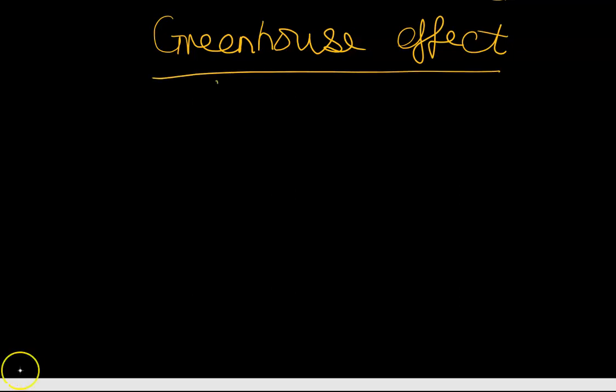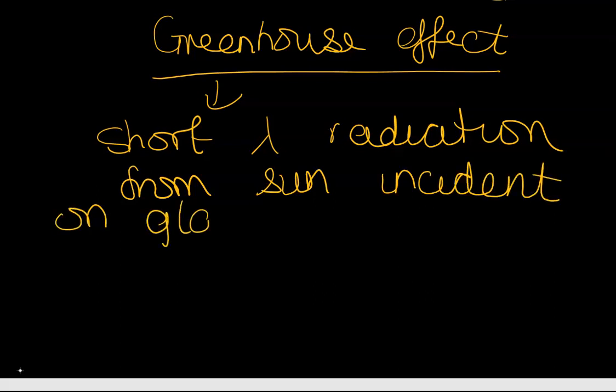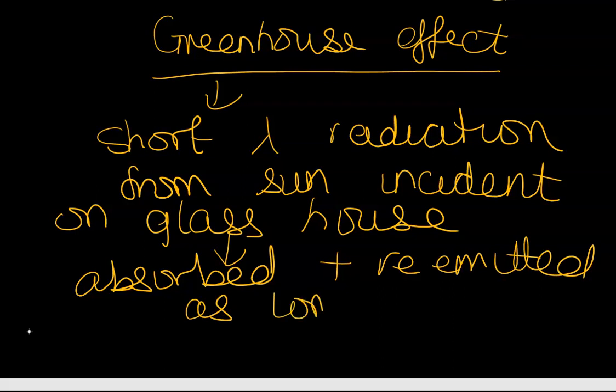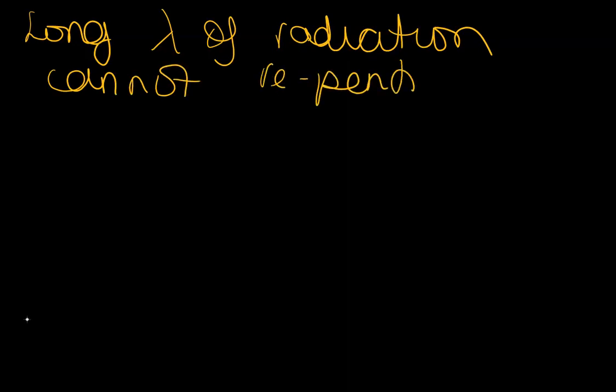Another example linked to radiation is the greenhouse effect. This is something that's pretty popular because it's linked to global warming. The greenhouse effect speaks about short wavelength radiation from the sun which becomes incident on a glass house. It's a glass house that has plants in it. This is absorbed by the plants and bodies within the glass and it's re-emitted as long wavelengths of radiation.